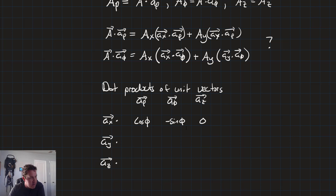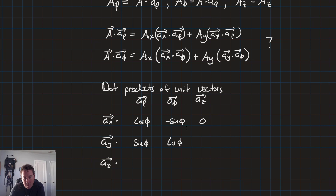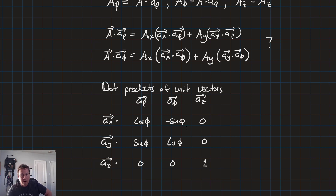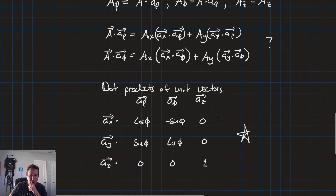Continuing the table: â_y · â_rho = sin(theta), â_y · â_theta = cos(theta), â_y · â_z = 0. For â_z: â_z · â_rho = 0, â_z · â_theta = 0, â_z · â_z = 1. This table needs to be committed to memory for use in our transformations.